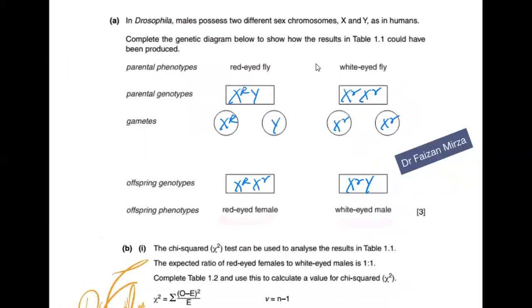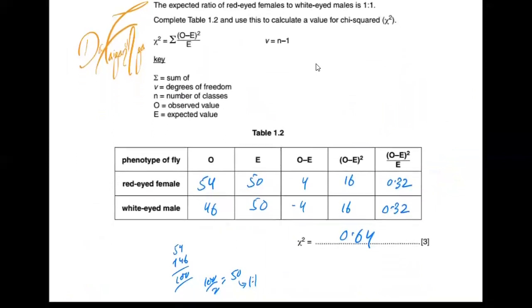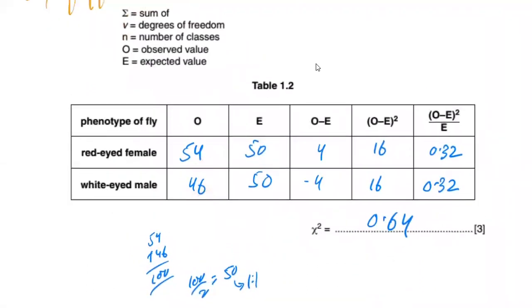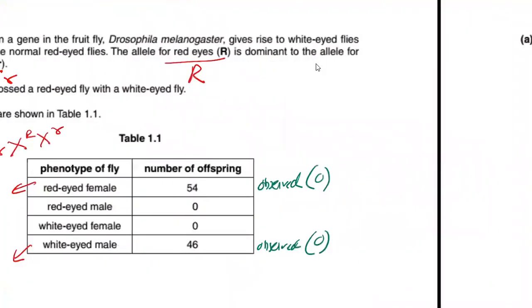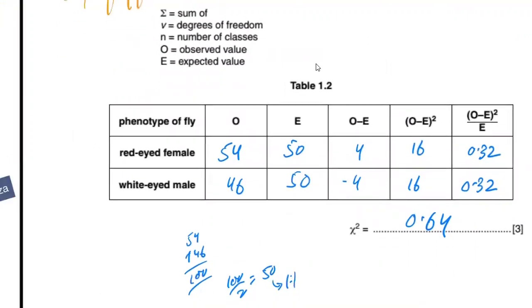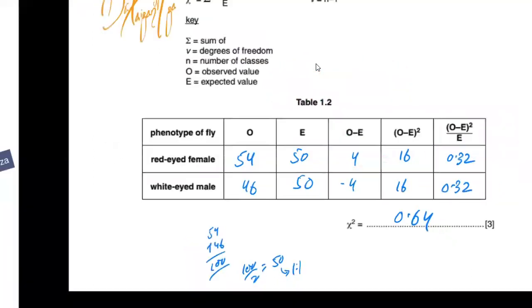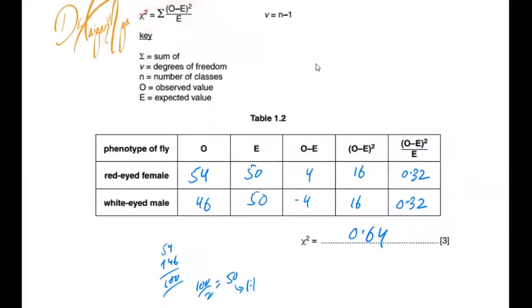The result is red-eyed females and white-eyed males. They now ask us to use the chi-square test. The expected ratio of red-eyed females to white-eyed males is 1:1. Observed values are 54 and 46, taken from the previous table. Total is 100, divided by 2 gives expected of 50 each. O minus E gives us the difference, which is then squared. The squared value divided by E gives us each component. Summing the column of (O minus E)² / E gives a chi-square value of 0.64.